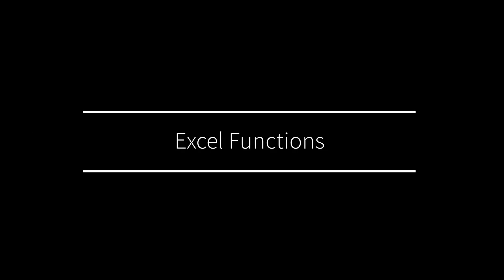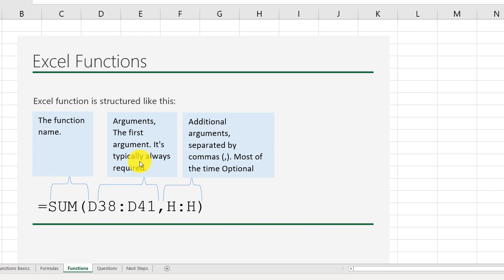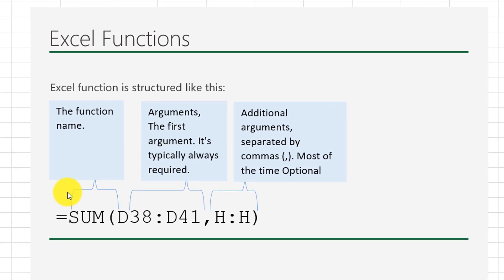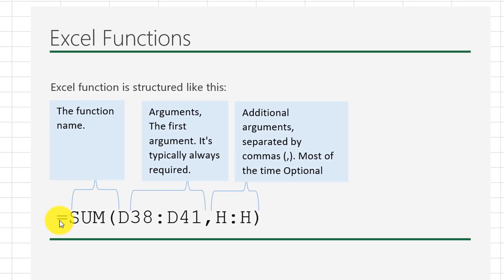Now let's look at Microsoft Excel functions. Functions are a little bit different from formulas, but they have a lot of similarity. You still need to type equal sign, then the name of the function, then typically mandatory arguments — which can be a cell reference, a value, or a range — and then a list of optional values.